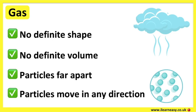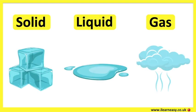When the gas is compressed, the space between the particles is reduced to fit small containers. Examples of gases are oxygen and carbon dioxide. There are three states in which matter can exist: solid, liquid, and gas.